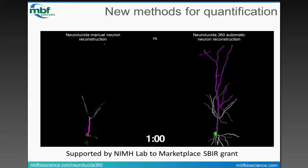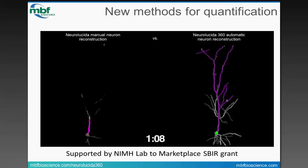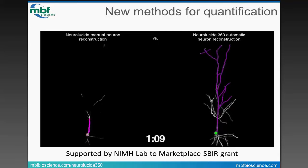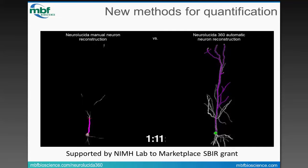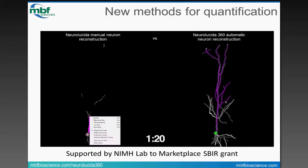With Neuralucida 360, we've released you from that microscope-centric point of view. From image stacks, you can automatically reconstruct neurons in a three-dimensional environment to obtain reliable data about the size, shape, and complexity of neurons. You're able to interact with the 3D image to dynamically change your view while simultaneously tracing or editing your reconstruction. This is really intuitive.